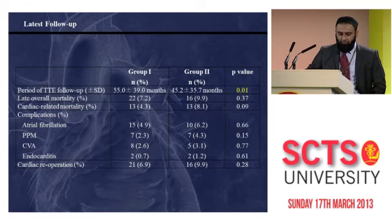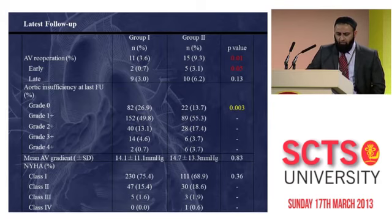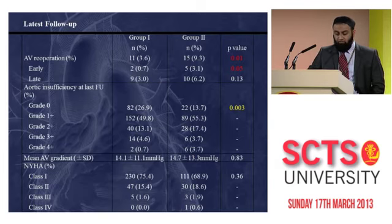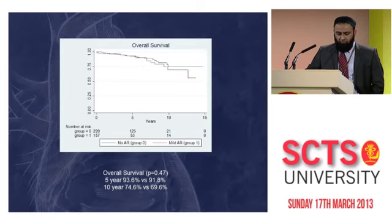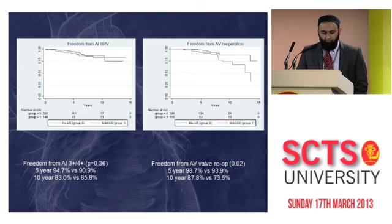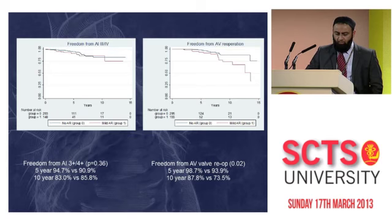Overall mortality, complications, and rate of re-operation at latest follow-up were similar. However, the group with mild AI had a higher percentage of re-operation, especially in the early period after surgery, and aortic insufficiency at latest follow-up was higher in the mild AI group. Overall survival was pretty similar between the two groups. Freedom from severe AI was again similar at ten years — 83% in group 1 and 85% in group 2. However, freedom from valve re-operation was significantly better in the no AI group: 88% compared to 73%.